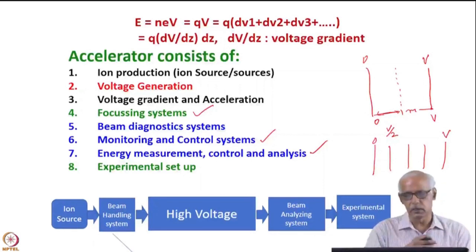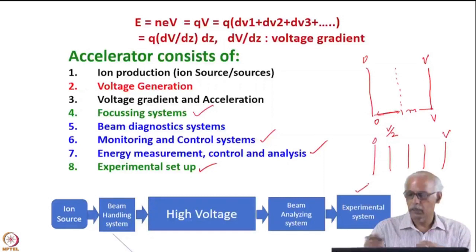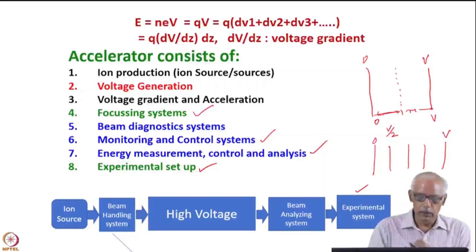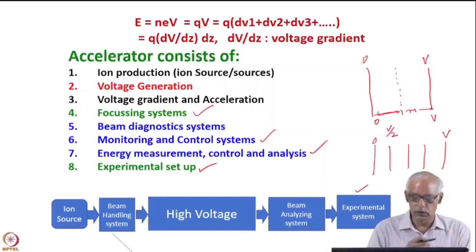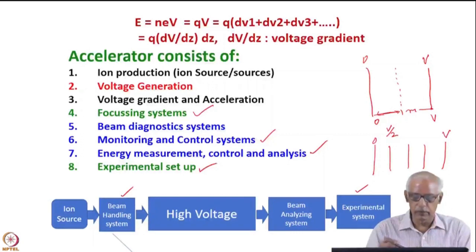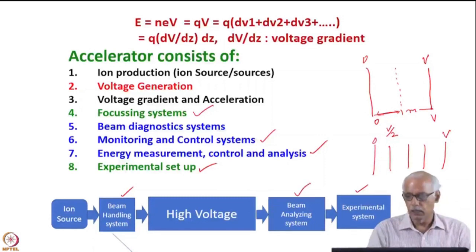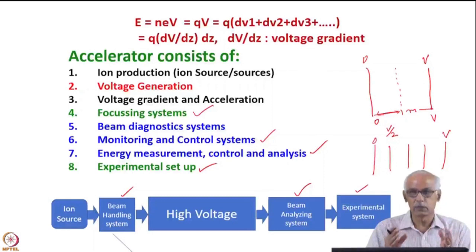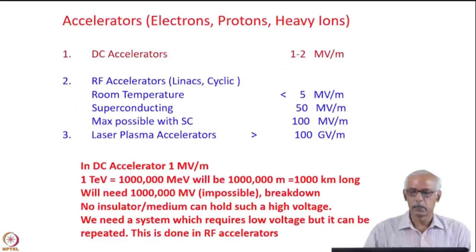The ultimate aim, of course, is that this beam should be utilized. Therefore, there has to be an experimental system — which could be a scattering chamber housing detectors and related equipment. A typical layout of an accelerator is given here where you can see the different components. Beam handling components are not only immediately after the ion source but also after the beam is accelerated — on the high-energy side — because the beam is diverging right from the ion source and also from the accelerator output.